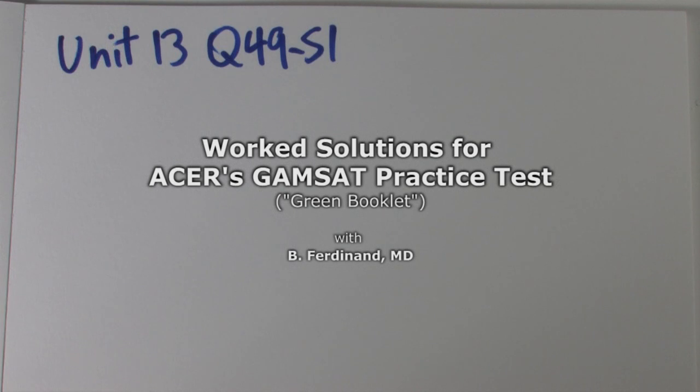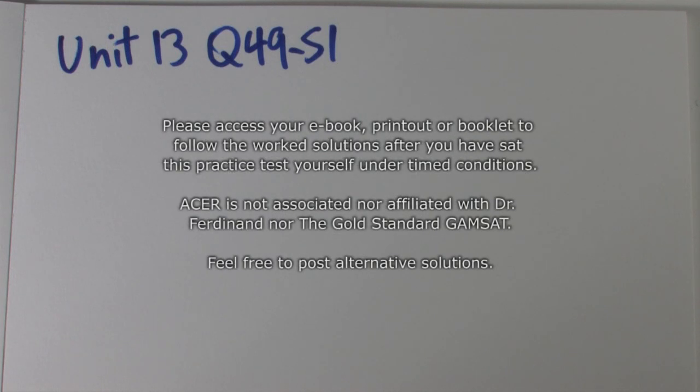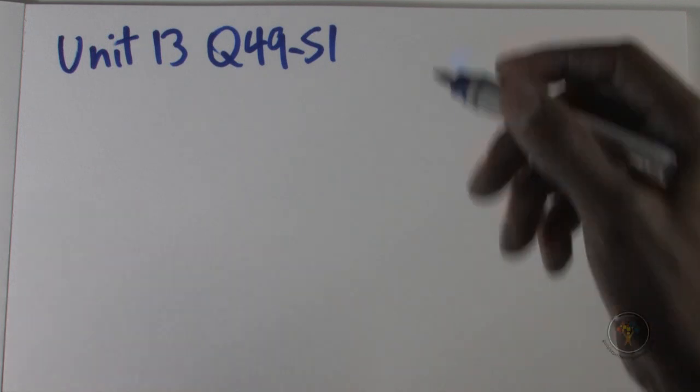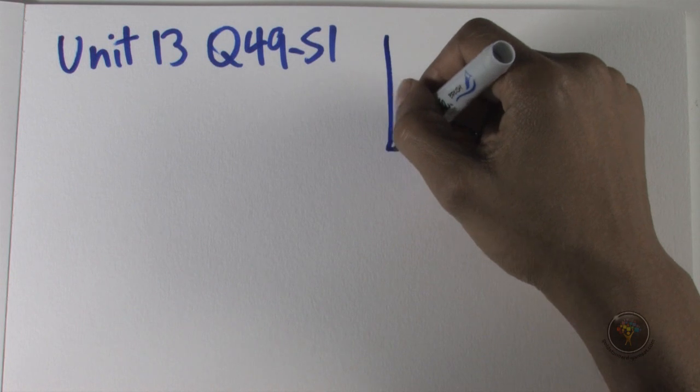Here we have Unit 13 questions 49 to 51. This starts by talking about activation energy, and hopefully it comes to your mind that activation energy is the minimum energy to give to a system for a chemical reaction to occur. Notice the curve, and you recognize it because you've seen this type of curve before.